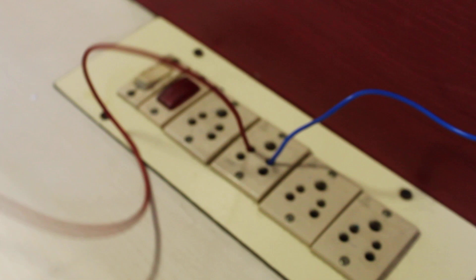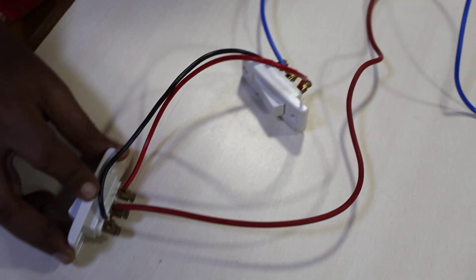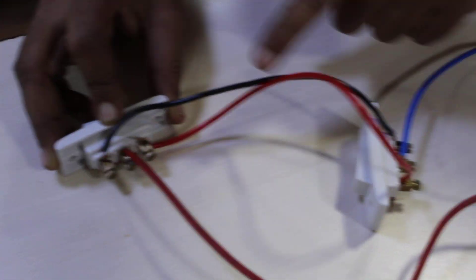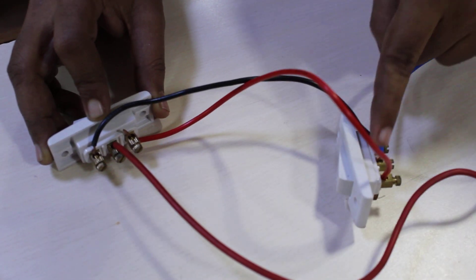Now let us see the connection. From the phase it is connected to the center point, which is point two. The other wire goes to point one.